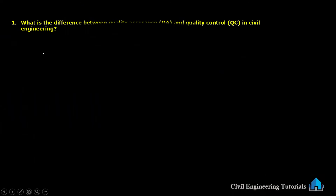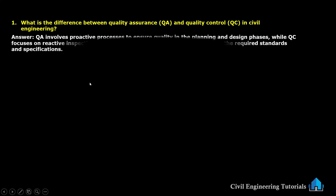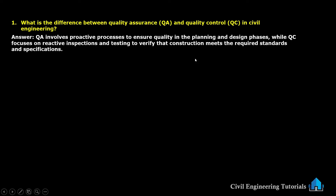The first question: what is the difference between quality assurance (QA) and quality control (QC) in civil engineering? Quality assurance QA involves proactive processes to ensure quality in the planning and design phases, while QC focuses on reactive inspections and testing to verify that construction meets the required standards and specifications.